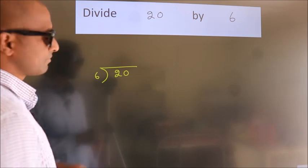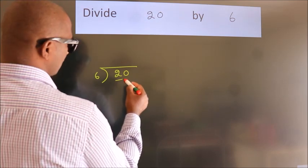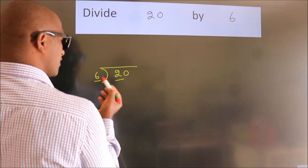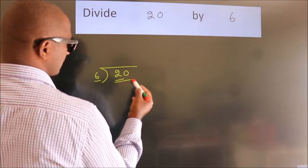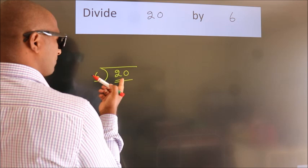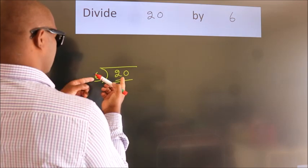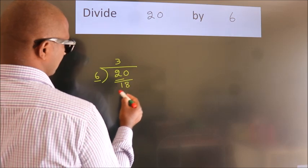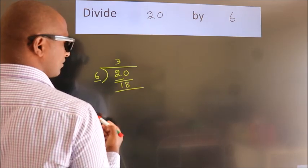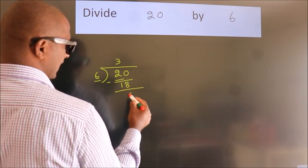Next. Here we have 2. Here 6. 2 is smaller than 6. So, we should take 2 numbers, 20. A number close to 20 in the 6 table is 6 threes 18. Now, we should subtract. We get 2.